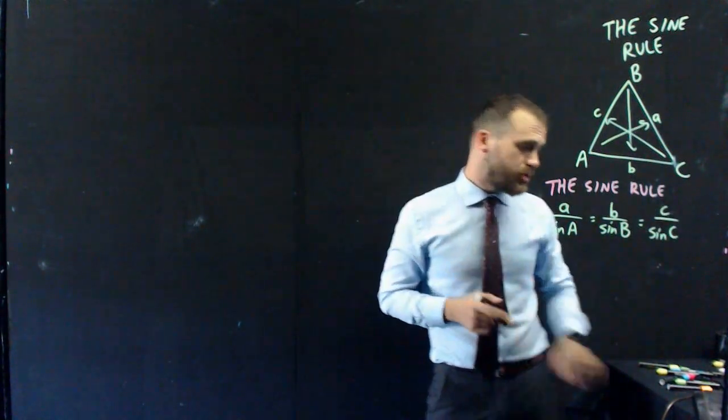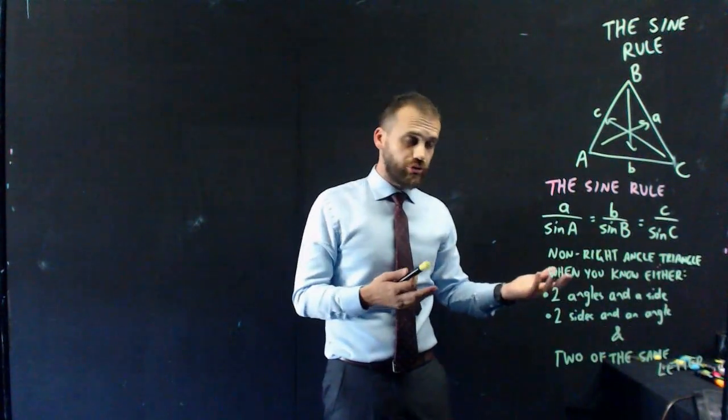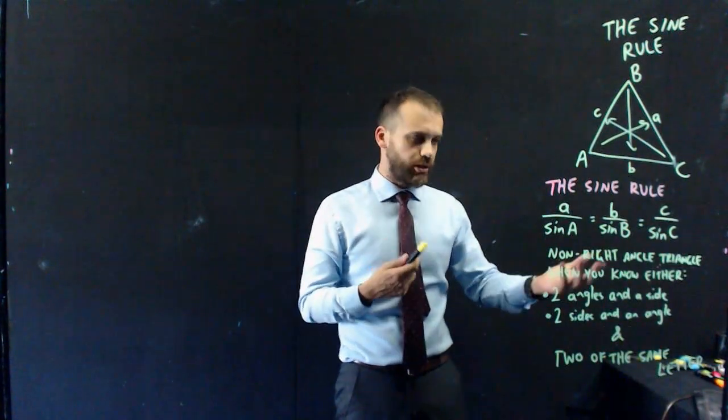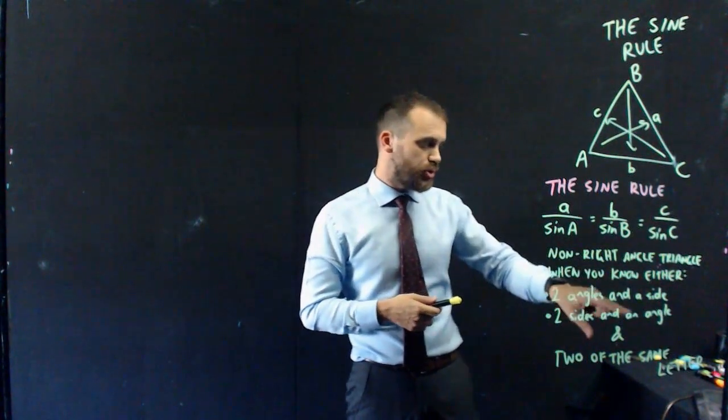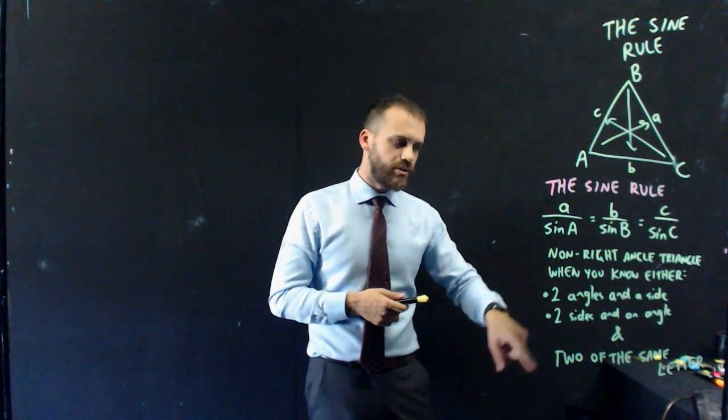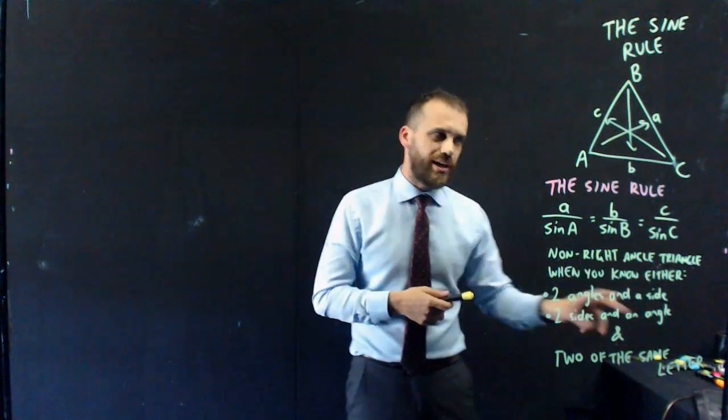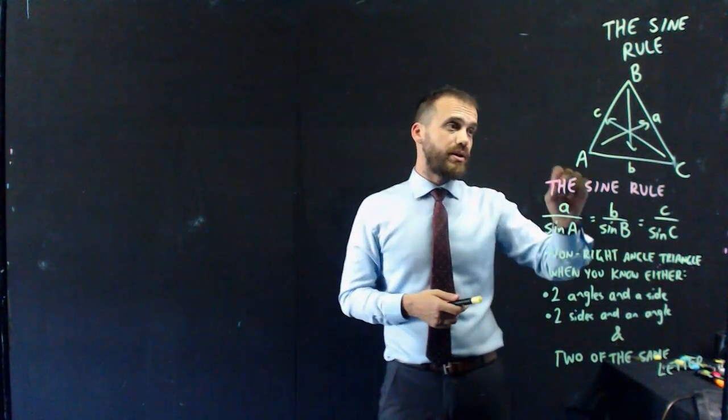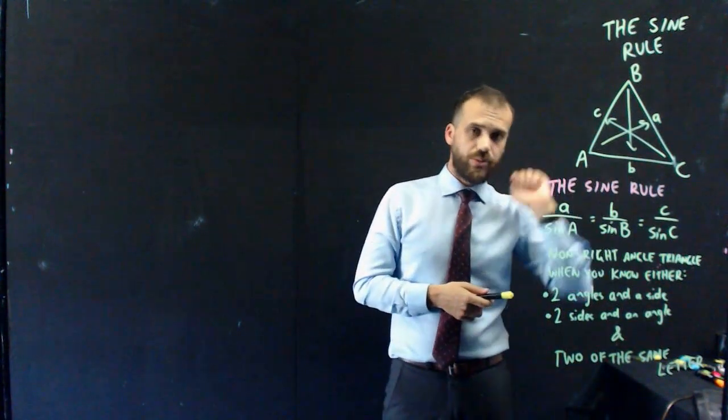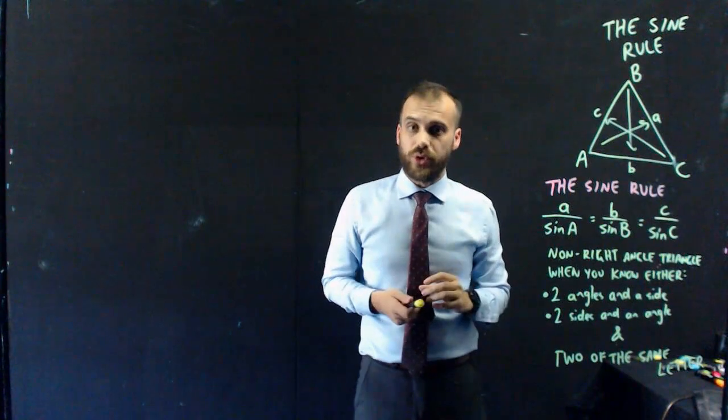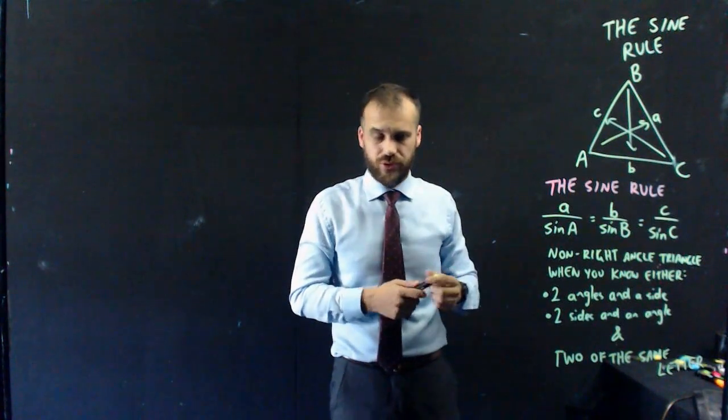When do we use it? Here's our rule. It needs to be a non-right-angle triangle when you know either two angles and a side, two sides and an angle, and two of the same letter. So, you need to know either capital A and small a, or capital C and small c, or capital B and small b. Otherwise, it won't work. You'll see more of that when we do something called the cosine rule.